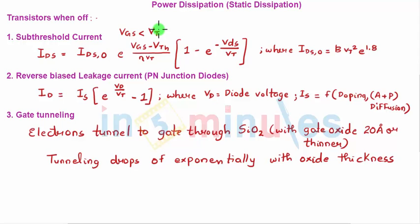The subthreshold current is a function of the threshold voltage. It clearly shows that as the threshold voltage reduces, the subthreshold current increases exponentially. Here is a formula which we have already seen when we studied subthreshold current.